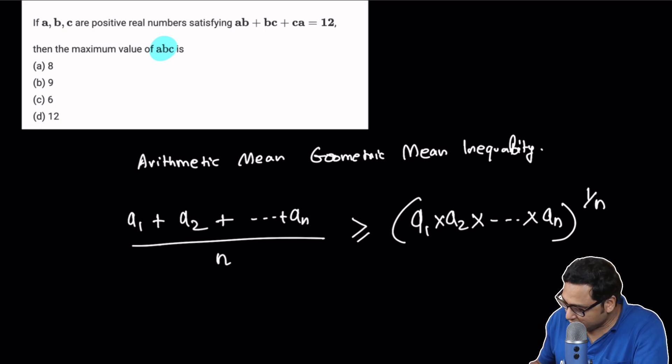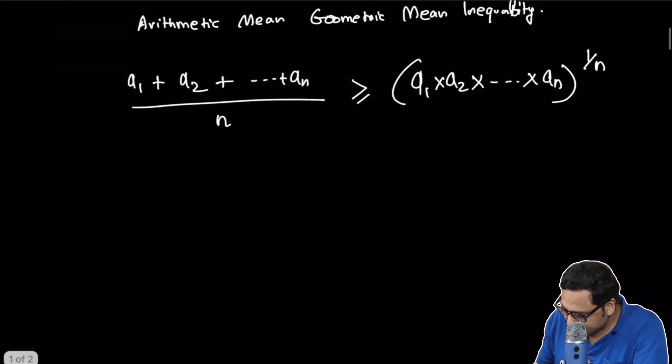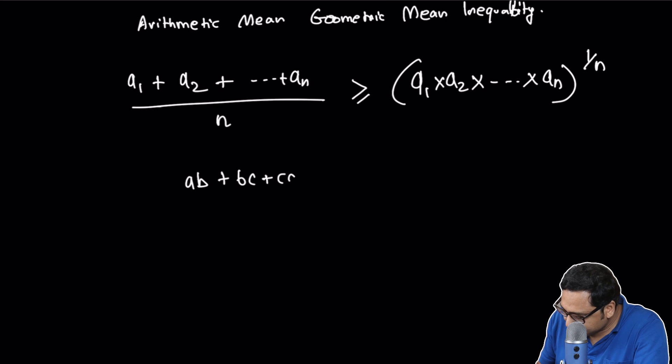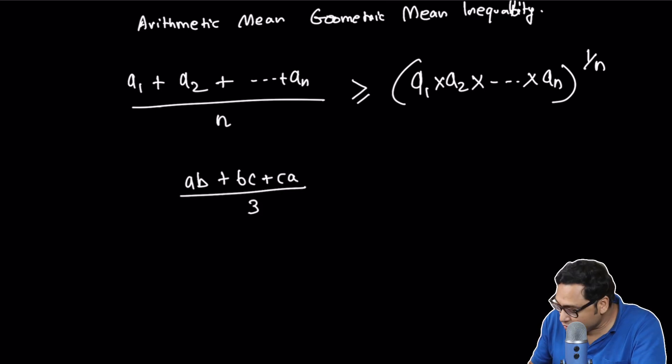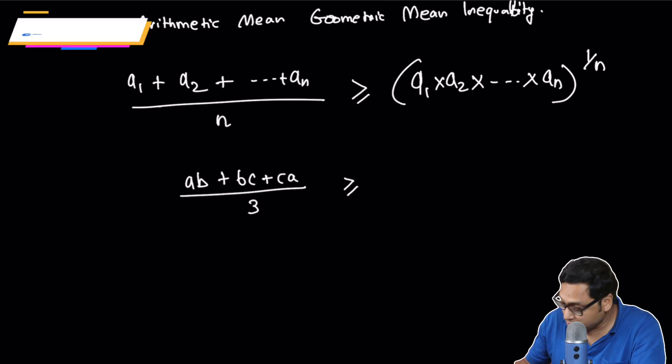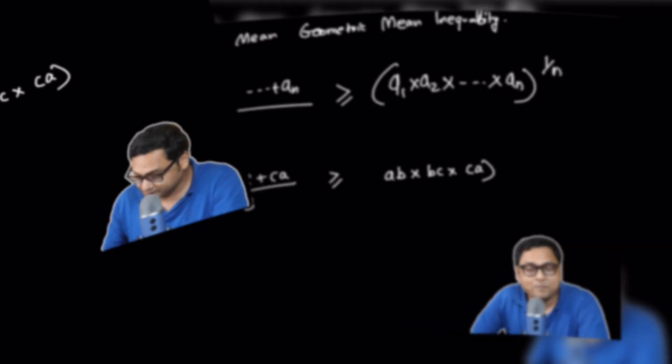So what we can do is we can calculate the arithmetic mean of the numbers, and we know that it is greater than or equal to the geometric mean of the numbers. Okay, so now we know AB plus BC plus CA is 12.